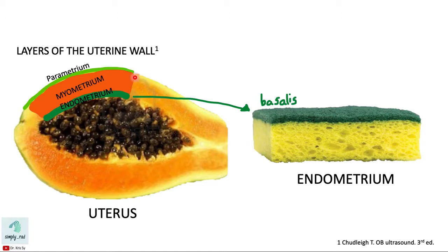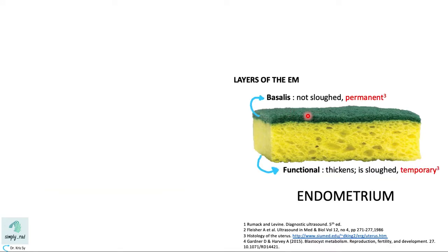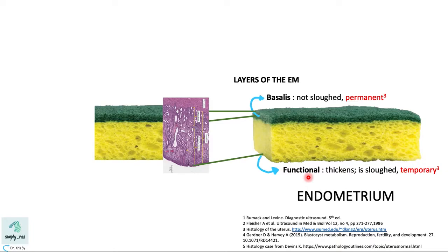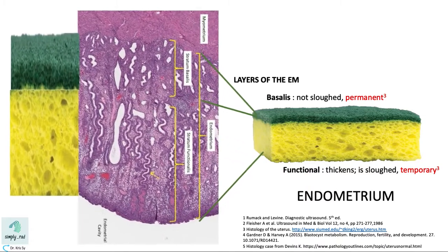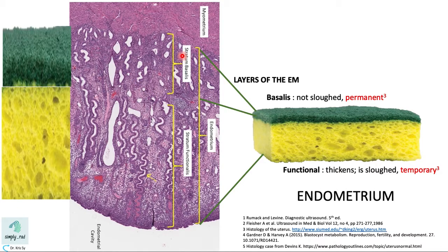The endometrium here is drawn in green on the left. The picture on the right shows us that the endometrium has two layers. The more basal part is called basalis. The basalis is permanent, while the yellow part here is temporary — meaning it is sloughed or shed, and is called the functional layer or functionalis layer. Both the basalis and functionalis layer have glands, but only the portion of the glands in the functionalis layer is the one which is being shed or sloughed.